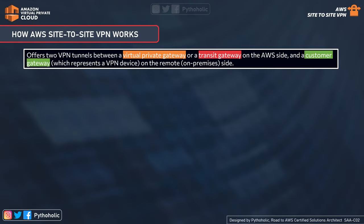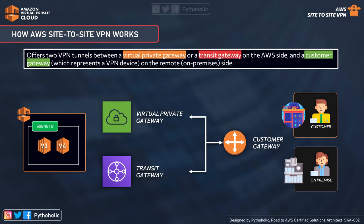Now that you understand tunnels and encrypted VPN tunnels, let's understand how Site-to-Site VPN works. When it comes to Site-to-Site VPN, AWS offers two VPN tunneling mechanisms. You can create a virtual private gateway or a transit gateway on the AWS side, and a customer gateway device and customer gateway on the customer side.